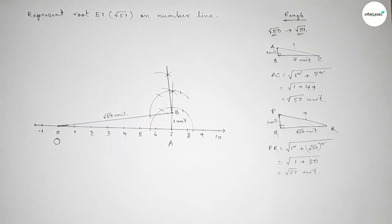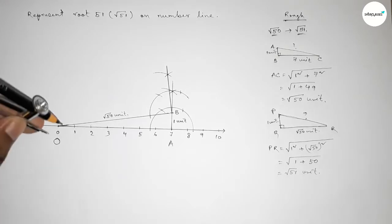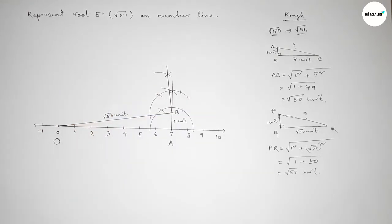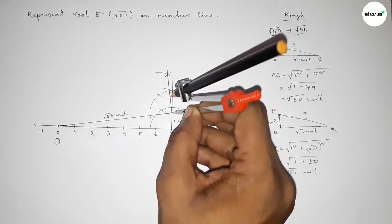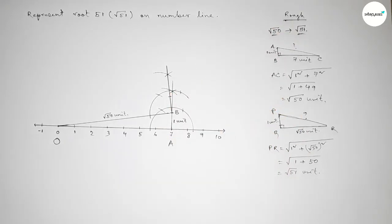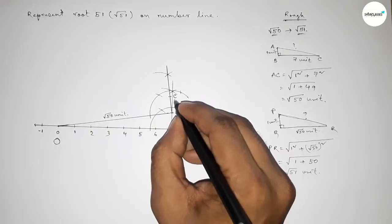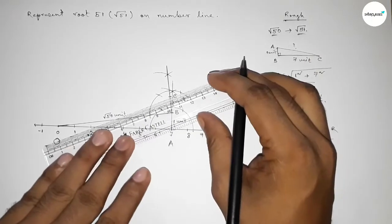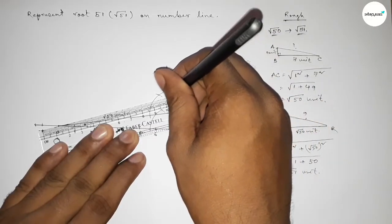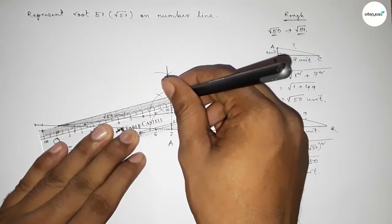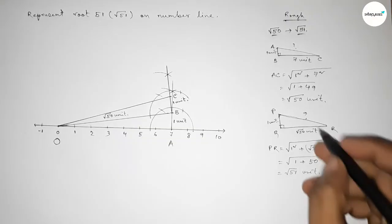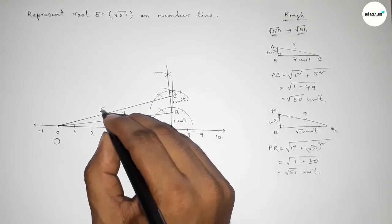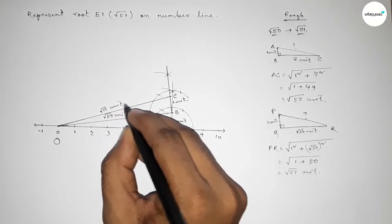Now taking one unit length by compass and putting the compass on point B, cutting here to get point C — this is 1 unit length. Now joining O and C to get the hypotenuse OC, so from this we can write OC equals root 51 units.